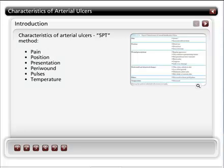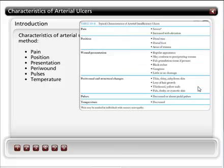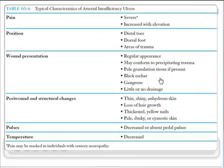In order to facilitate identification of ulcer similarities and differences, typical characteristics of various types of ulcers will be described using the 5PT method. This includes pain, position, presentation, periwound, pulses, and temperature.